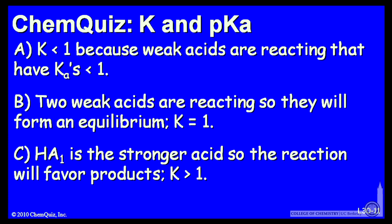B, two weak acids are reacting, so they will form an equilibrium where k is 1. Or C, HA1 is the stronger acid, so the reaction will favor products k greater than 1. So think about those three and make a selection.